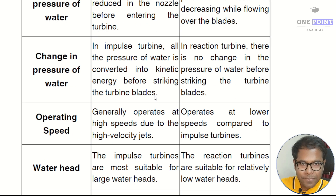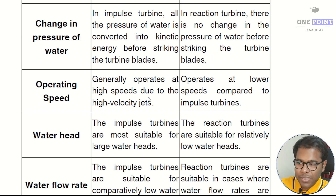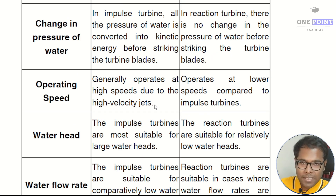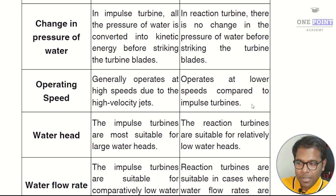The next difference is based on operating speed. Generally, an impulse turbine operates at very high speeds due to high-velocity jets, whereas a reaction turbine operates at lower speeds compared to impulse turbines.